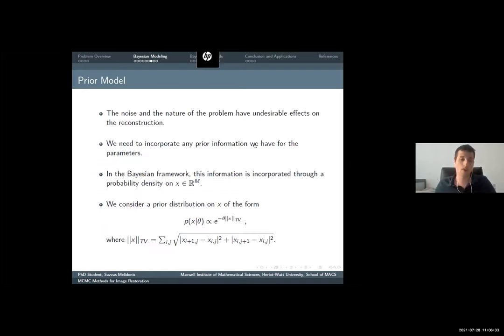This is an issue because the likelihood is now non-informative. In this context, where the noise is maybe severe and the nature is ill-posed, we definitely need to incorporate any prior information we have for our true image. In the Bayesian framework, this information is incorporated through what we call the prior model, a prior distribution over the true image.